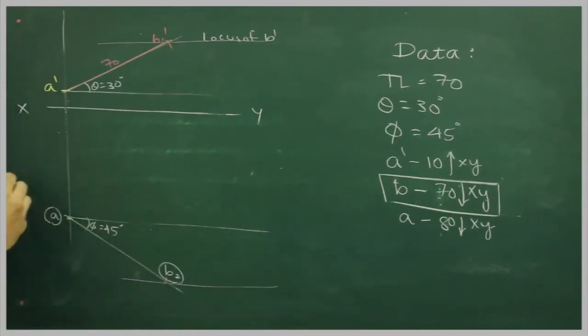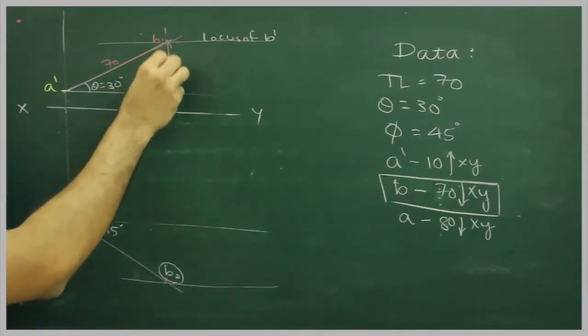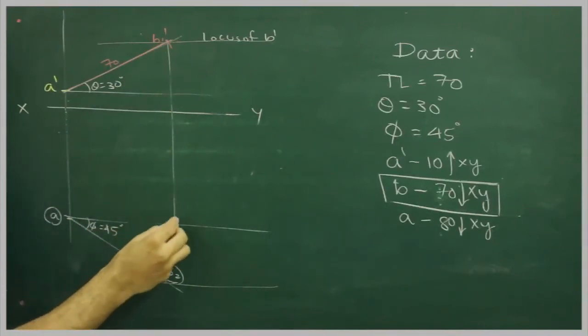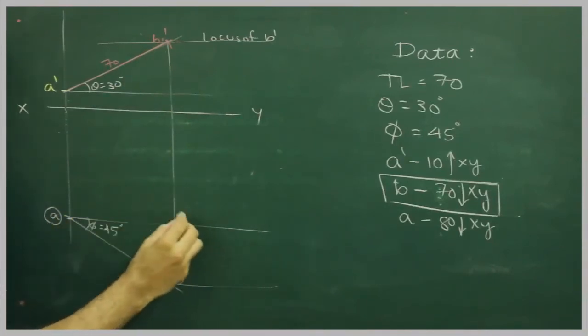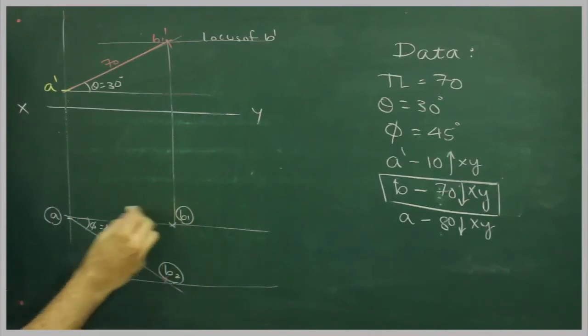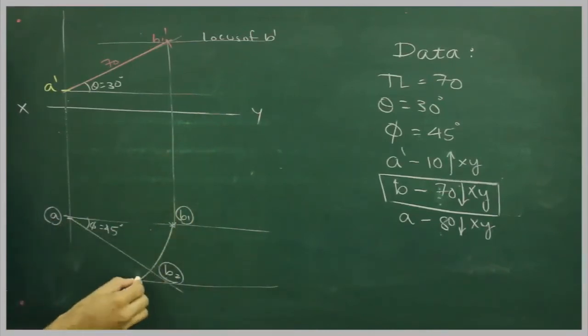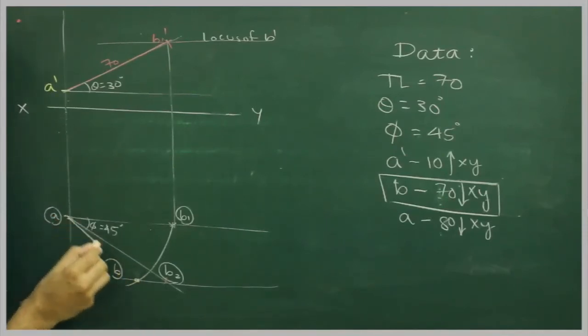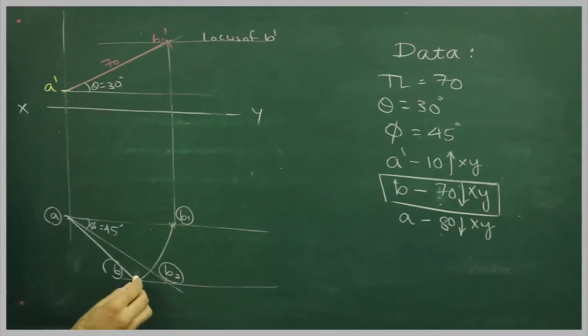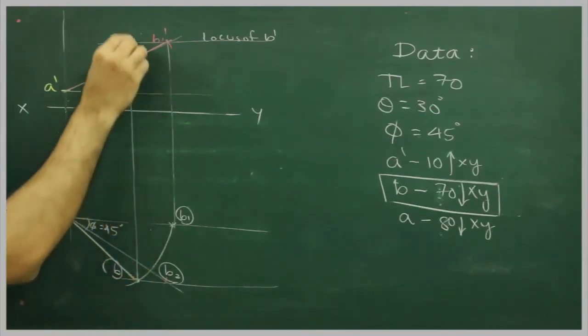Then we can project this b1 dash straight down till here. Wherever it will intersect with this line, that would be b1. Take b1 and rotate, so we get point b. Again this will be the assumed one. Then you take this point straight up.